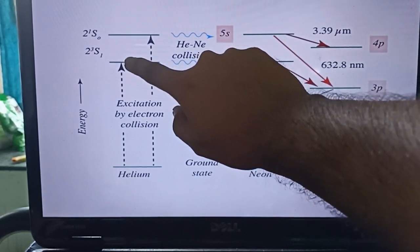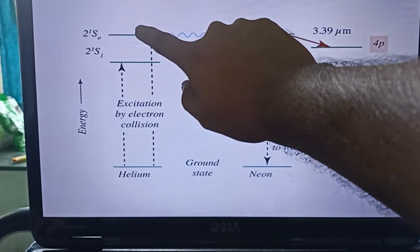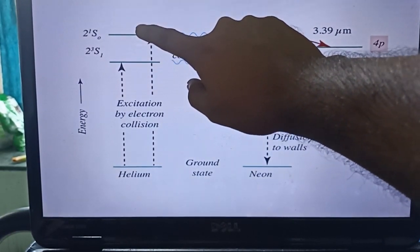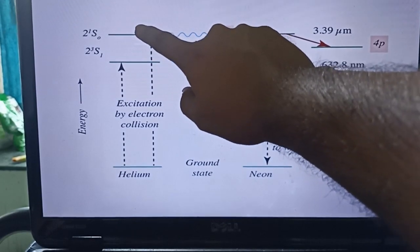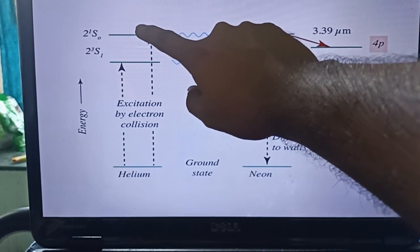Helium atoms when excited go to these two energy levels or two states: 2¹S₀ and 2³S₁. These two states are called metastable states because the Helium atoms remain longer time in these two energy levels before coming to the ground state.